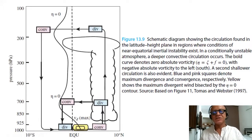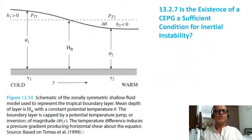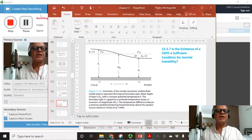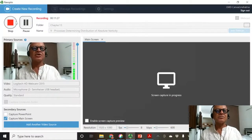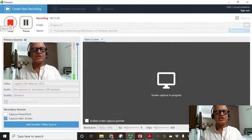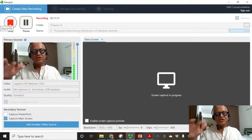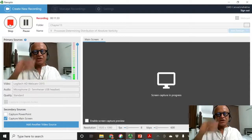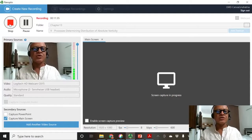Just get used to the idea of what we are doing: we are basically looking at processes that determine the absolute vorticity distribution in the horizontal and in the vertical, including the secondary circulation which is also involved in the balance.